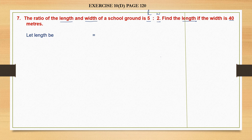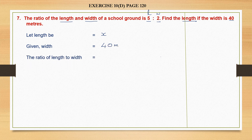Let's start. Since we don't know the length, we'll make it x. So let the length be x meters and width is given to us as 40 meters. The ratio of length to width is also given to us, which is 5 is to 2. Now we have to make it a proportion: x is to 40 is to 5 is to 2.